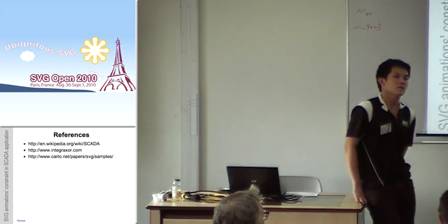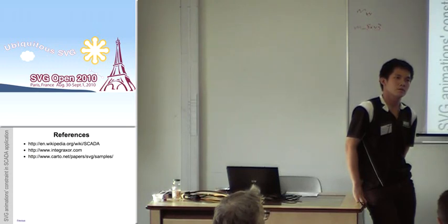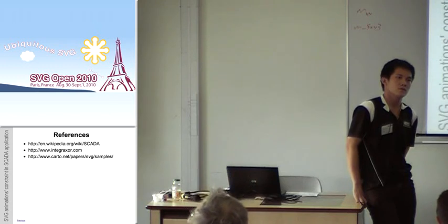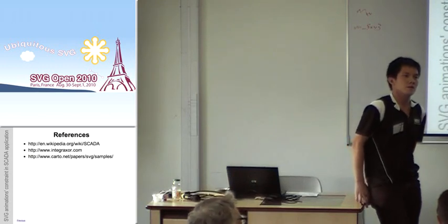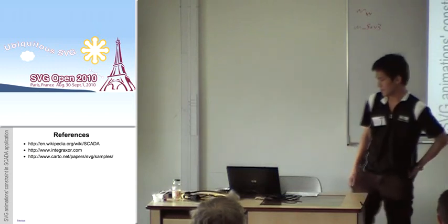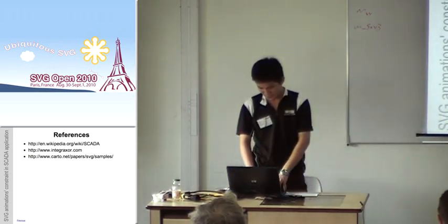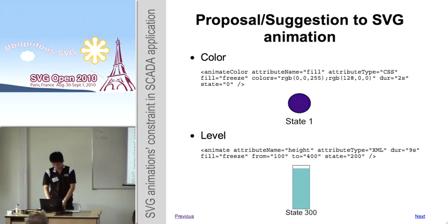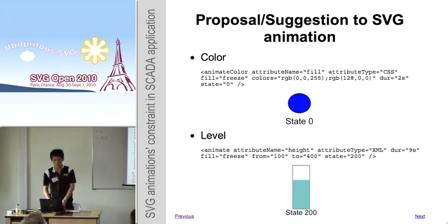The questioner asked for clarification on the state attribute: was it live in the DOM, and how exactly would it be used? The presenter explained using the color animation example — the state is related to the color configuration. When the state is zero, it takes the first color value. If you manipulate the state attribute via JavaScript, you would expect the color to change to the second configured value.